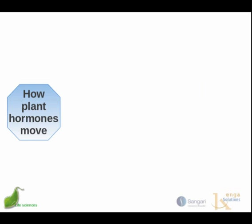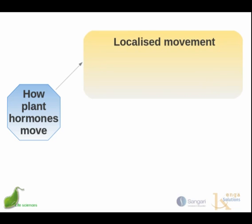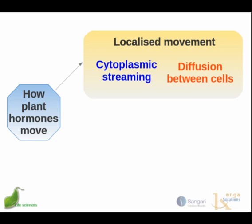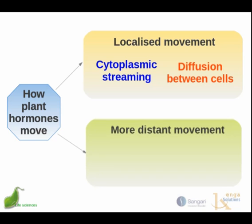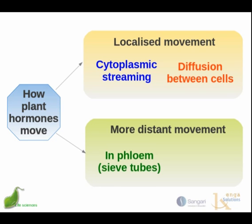Since plants don't have a heart pumping blood, hormones are transported within the plant body using different methods. If it's just something going to be secreted and used locally, then cytoplasmic streaming within cells or the slow diffusion of molecules between closely adjacent cells is adequate. For hormones that need to move over a longer distance, they can move into the sieve tubes of the phloem and move upwards in the xylem. So if something is secreted in the roots and needs to get up to the leaves, it can move up in the xylem.